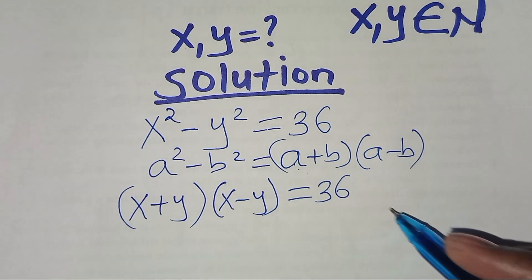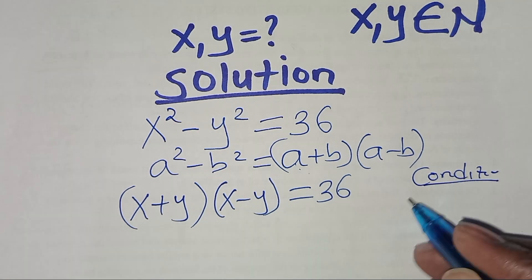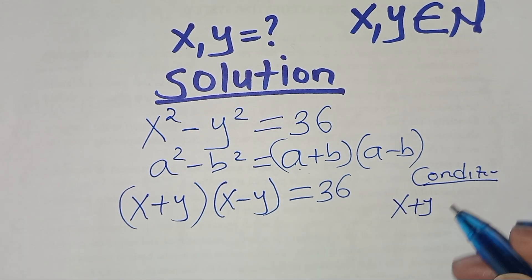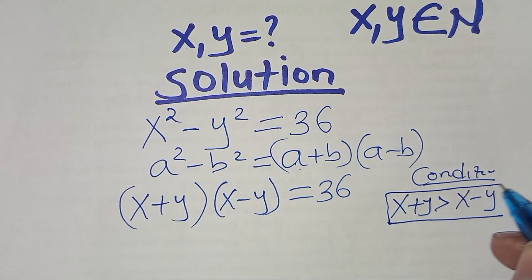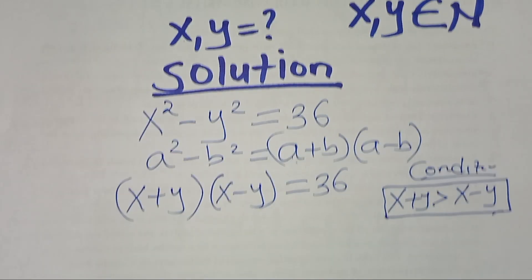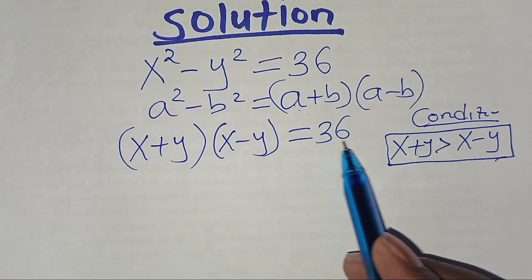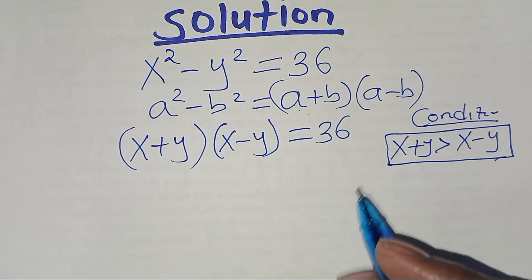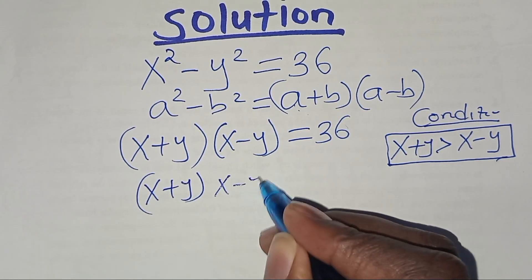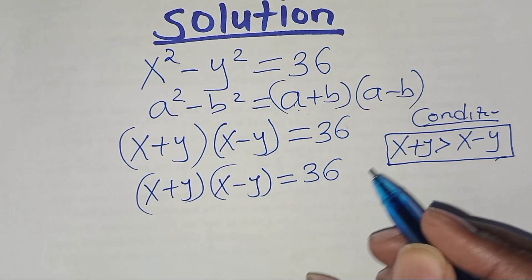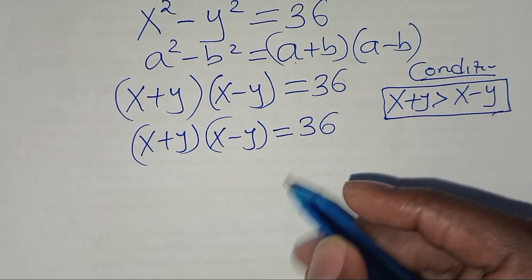We have the condition that x plus y is greater than x minus y. Now, from what we have, let's find the factors of 36. We have (x + y)(x - y) = 36, so let's get the factor pairs of 36.